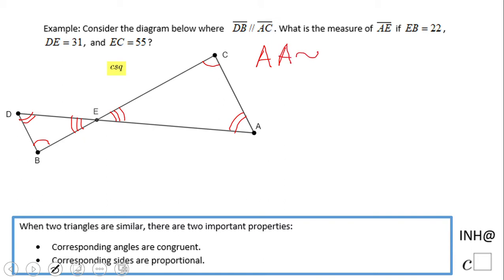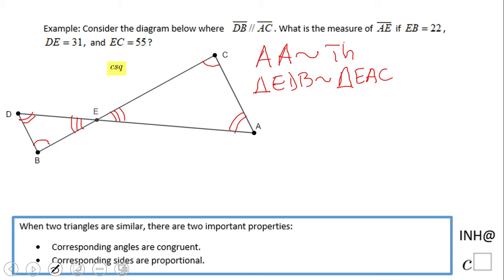This is the Angle-Angle Similarity Theorem. By using this theorem, we know triangle EDB is similar to triangle EAC. You really need to be careful with this statement — you want to use the corresponding letters, and if you write the corresponding letters correctly, writing the proportion will be a lot easier.